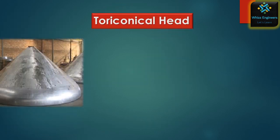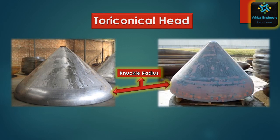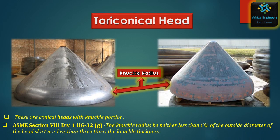The fifth type is the tori-conical head, which is a conical head with a knuckle portion. As per ASME Section 8 Division 1 UG-32G, the knuckle radius shall be neither less than 6% of the outside diameter of the head skirt nor less than 3 times the knuckle thickness. The uses of these heads are similar to the conical head.